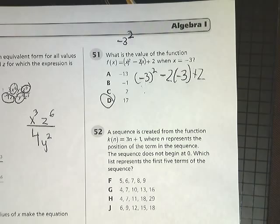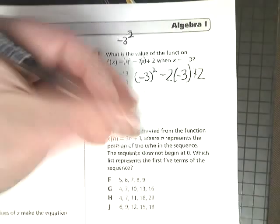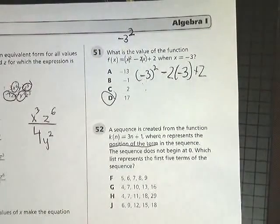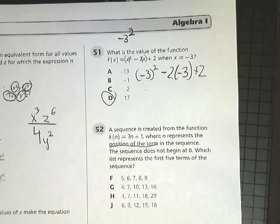That means position of the term refers to where it is. If it's the first term, then n would be 1. If it's the second term, it would be 2 and so forth. The sequence does not begin at 0, which means there's no 0 term of the sequence. It starts naturally at 1, just like an actual natural number sequence.